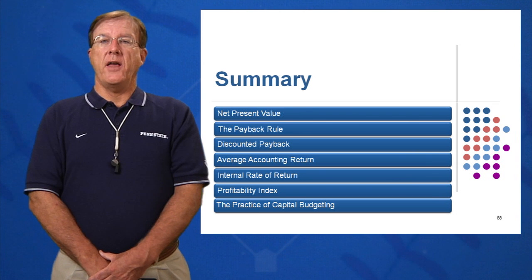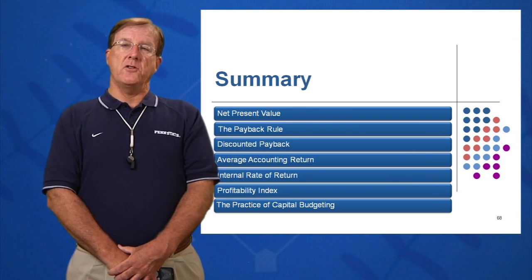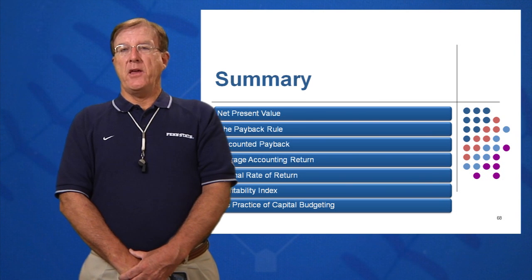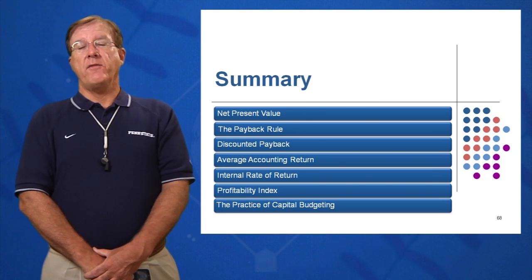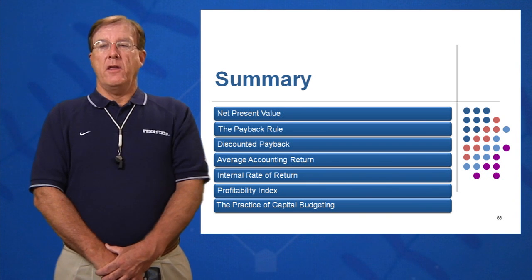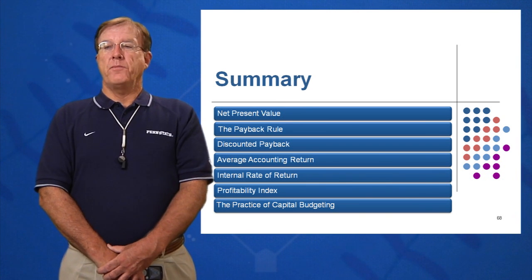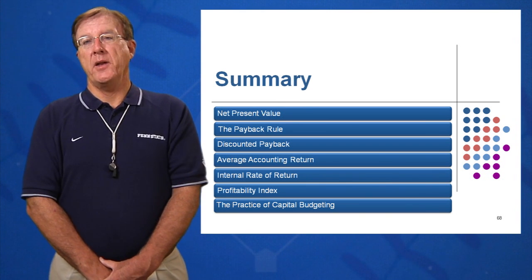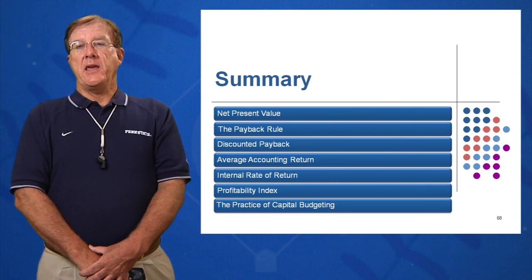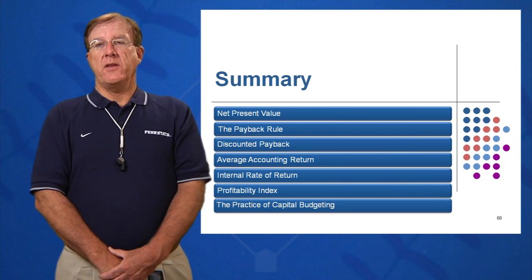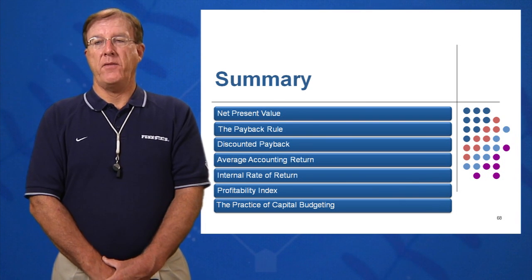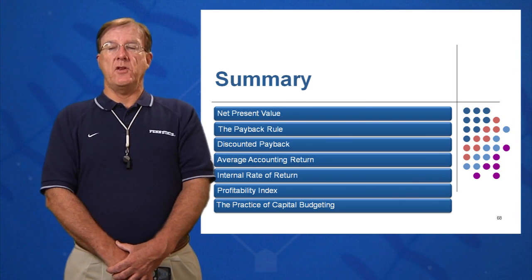Internal rate of return is heavily used, and when we see the letters IRR, we always write down NPV equals zero, which equals minus the cash outflow plus the discounted cash inflows, and find the rate at which those are equal. Profitability index is used heavily in government and nonprofits, and if PI is greater than one, we have a positive NPV, and if PI is less than one, we have a negative NPV — so it's very consistent with the NPV decision rule.